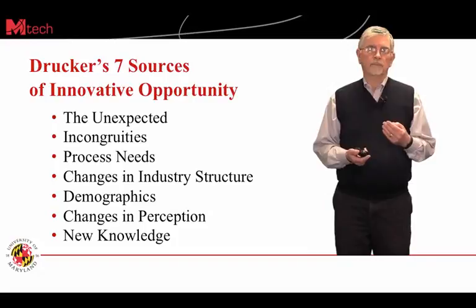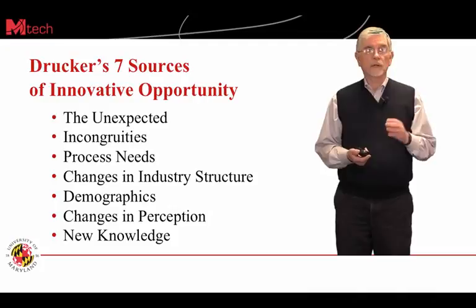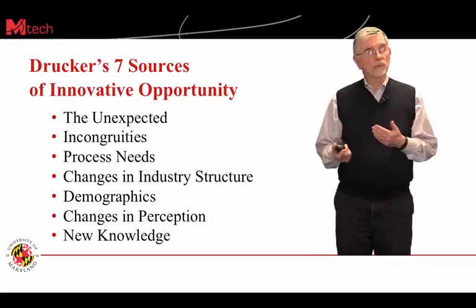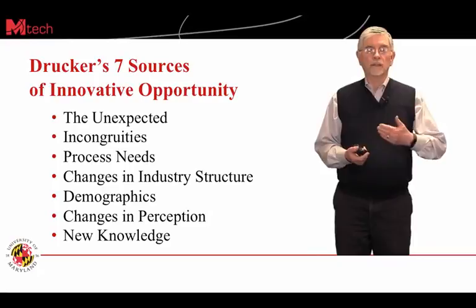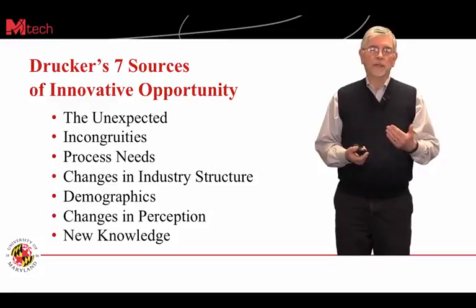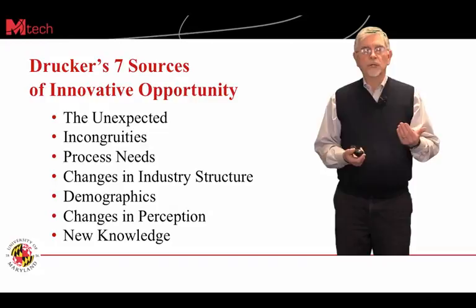Incongruities — things that don't appear to be what they seem, but are opportunities nonetheless. Process needs are fairly obvious: some process is working and there is a recognized need to improve that process. Changes in industry structure — we talked earlier about creative destruction, economic destruction, and what that does to the marketplace.